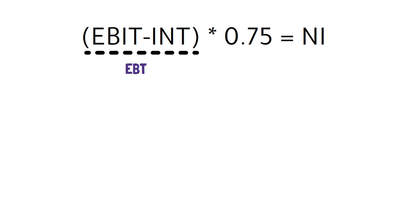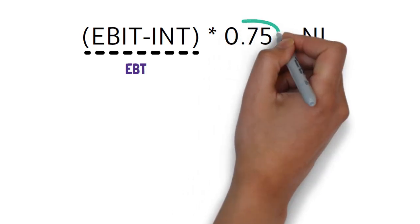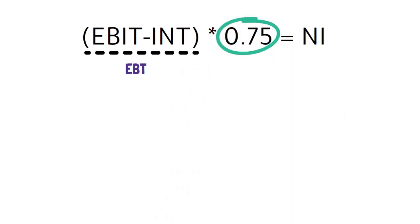Since the tax rate is 25 percent, this means that 25 percent of EBT is paid as tax and the leftover 75 percent is our net income. So we basically formulated an equation.